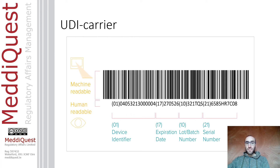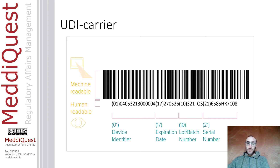The UDI carrier is the format in which you can see the UDI. There are two parts: the Automatic Identification and Data Capture (AIDC), a technology used to automatically capture data including barcodes, smart cards, biometrics, and radio frequency identification; and the Human Readable Interpretation (HRI), which is a legible interpretation of the data characters encoded in the UDI carrier, important when no automatic system is available. The UDI-DI is the number after the indicator '01' in brackets, which is the placeholder for the UDI-DI.